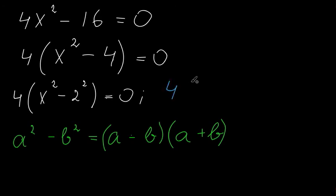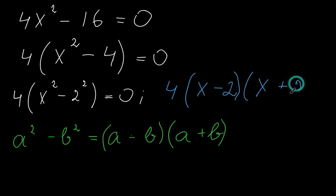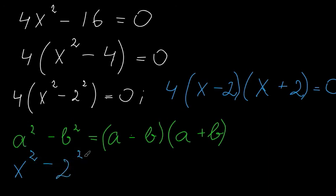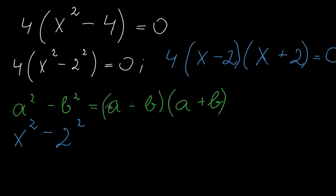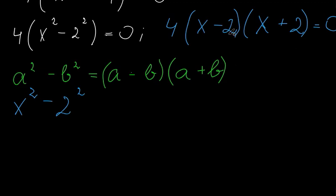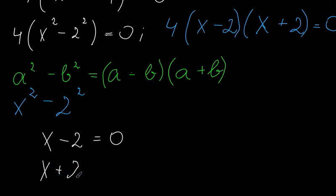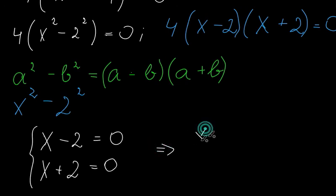So we get 4 times (x minus 2)(x plus 2) equals zero. Using the formula, we simply say that x minus 2 equals zero or x plus 2 equals zero, and we get that x equals 2 or x equals negative 2.